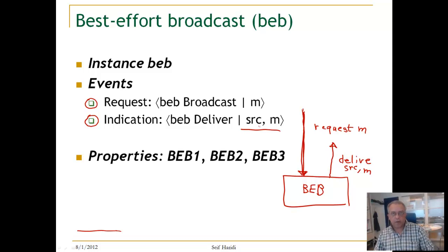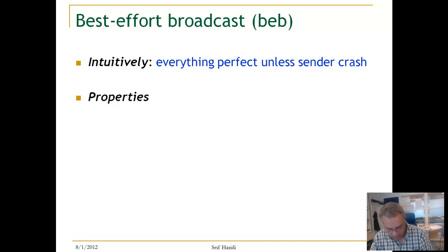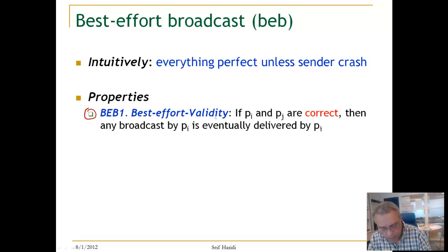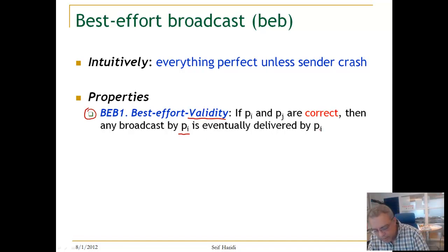What are the properties of best effort broadcast? The basic idea is that everything will work reliably as long as the sender is alive — everything is perfect unless the sender crashes. The first property, we call it validity, says that if PI and PJ are correct processes and PI broadcasts a message, then this message is eventually delivered by PJ. So as long as the sender is correct, the message will be delivered by every correct process.